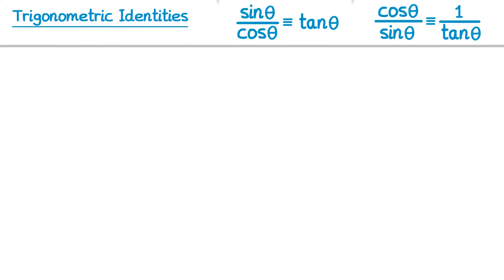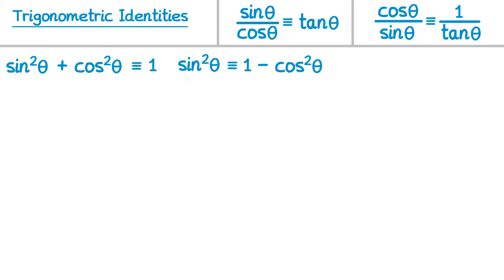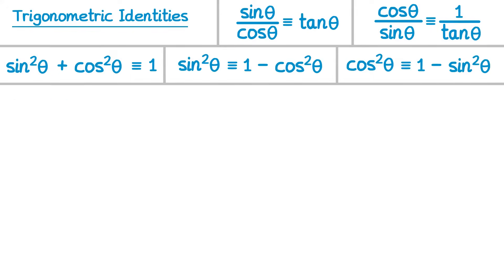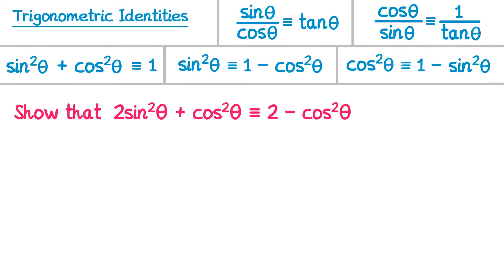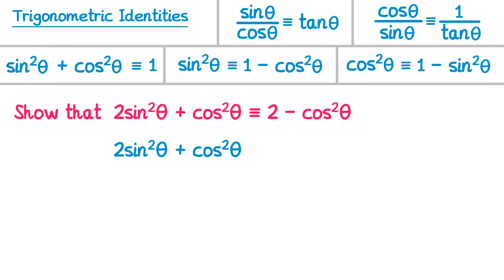Let's look at a worked example. Keeping our identities at the top — the ones involving tan, and sine squared plus cos squared equals 1 with its rearrangements — we need to show that 2 sine squared theta plus cos squared theta is identically equal to 2 minus cos squared theta. We start with the left hand side. Looking at the right hand side, there are no sine squared thetas, so we need to remove that using the identity: sine squared theta ≡ 1 minus cos squared theta.